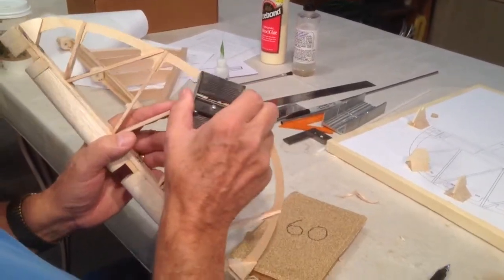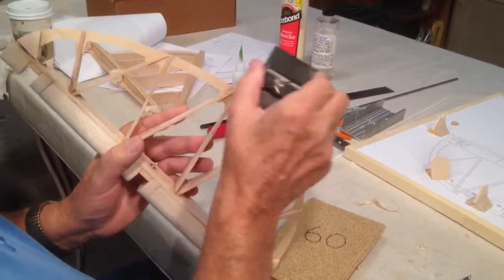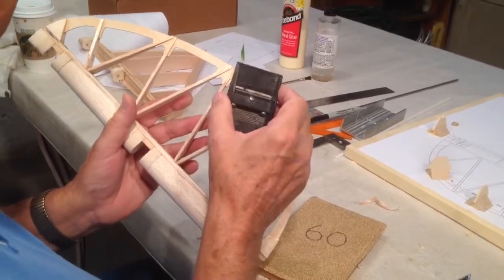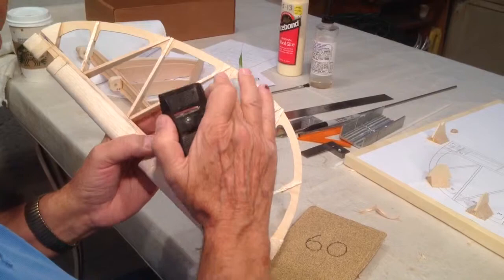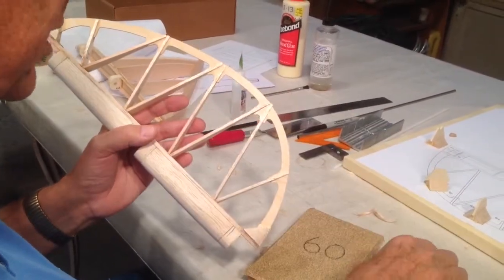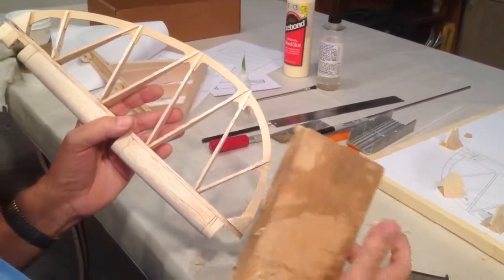We've taken the ribs down just a little bit with this razor plane. It did not plane anywhere along this area, but only along the edges here, or along the ends as it tapers into the trailing edge.